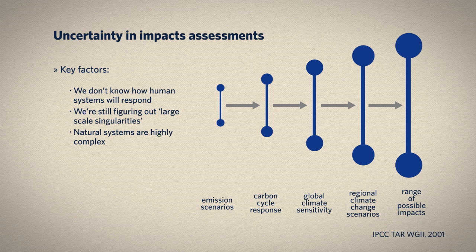Uncertainty grows as we move from emissions scenarios to the response of the global climate to impacts on systems. Many scientists, however, argue that we need to get comfortable with uncertainty. We'll never be able to flawlessly predict the behaviour of human and natural systems, but climate change mitigation and adaptation are nevertheless essential. Go to the discussion board to share your perspective with your classmates.